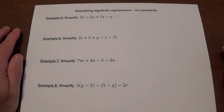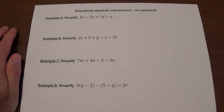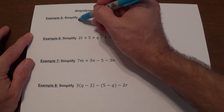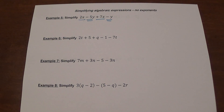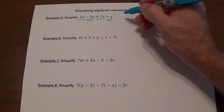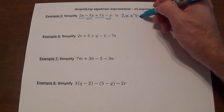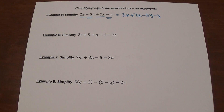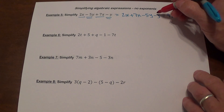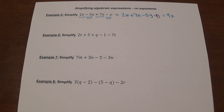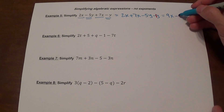Now we have two variables. When you have two variables, you combine like variables together — x goes with x, y goes with y, t goes with t, etc. In this case we have 2x plus 7x, and negative 2y minus y. Rewriting: 2x plus 7x minus 5y minus y. Combining the x's: 2x plus 7x gives 9x. Negative y means negative 1y, so negative 5y minus 1y gives negative 6y. The answer is 9x minus 6y.